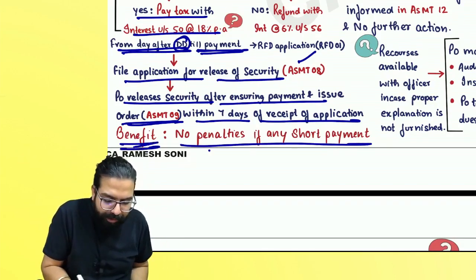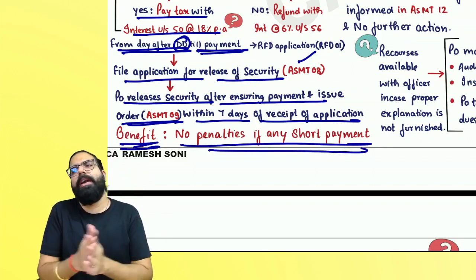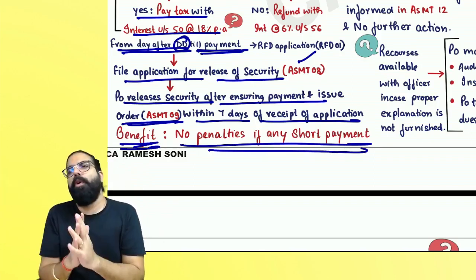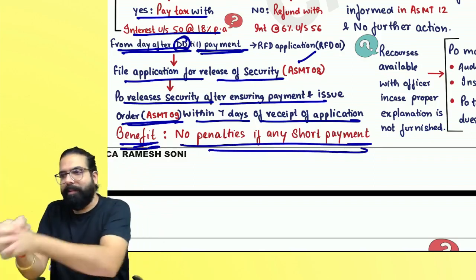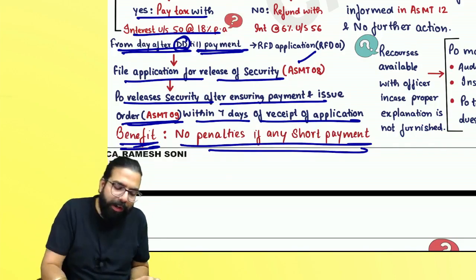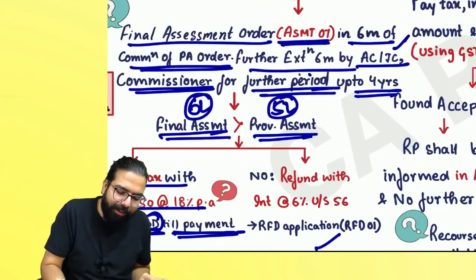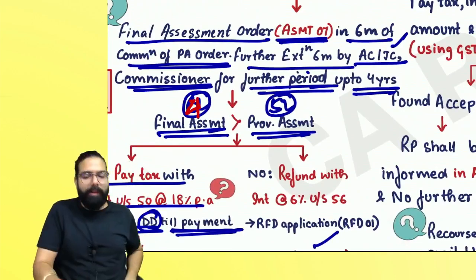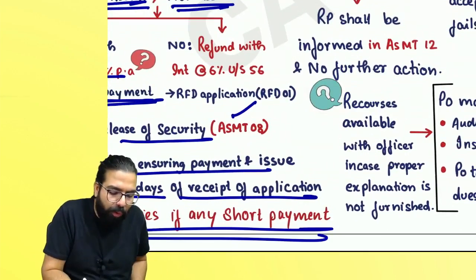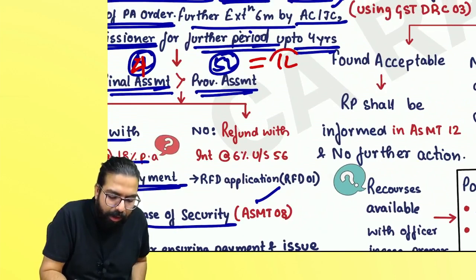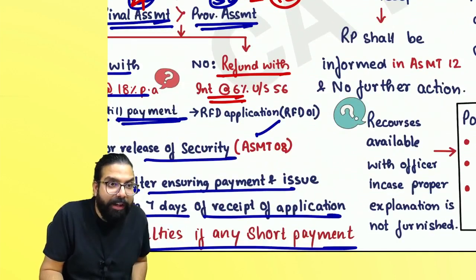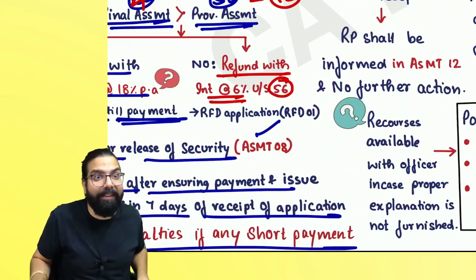Always remember, the benefit of provisional assessment is that penalties will not be imposed, because you would have paid something less. If in the provisional assessment you had paid five lakh rupees and the final assessment came to only four lakh rupees, you will get a refund along with interest at the rate of 6% under section number 56.